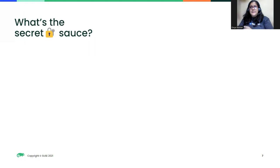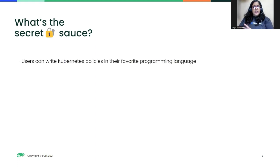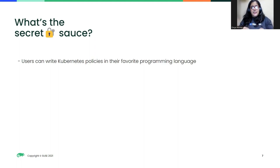There are other cloud-native tools in this space — like OPA and Gatekeeper — which are more mature. But for anyone who's used OPA and Gatekeeper, you know the steep learning curve that comes with it — you have to learn a separate language in the form of Rego from scratch to actually start writing policies. So what if you could write your Kubernetes policies in a programming language of your choice?